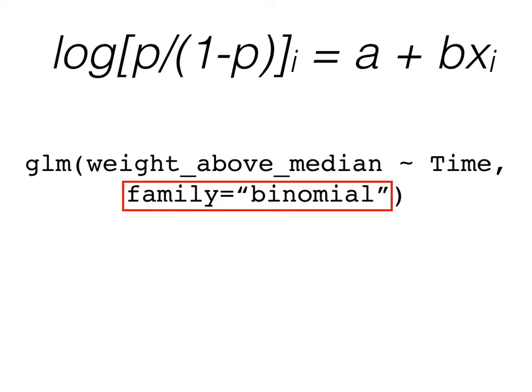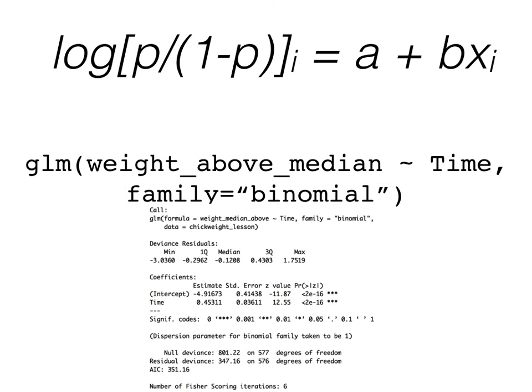Okay, just like linear regression, we can call a summary on this model and get an output like this. Our A is the estimate of our intercept, here roughly negative 4.9. Again, the main thing we should take away from this is that at time 0, when x is 0, the y value is negative, so below 50% chance. Next, we have our B, which is roughly 0.5. This tells us that as more time goes by, the probability of the chick weight being above the median increases, since the value is positive.